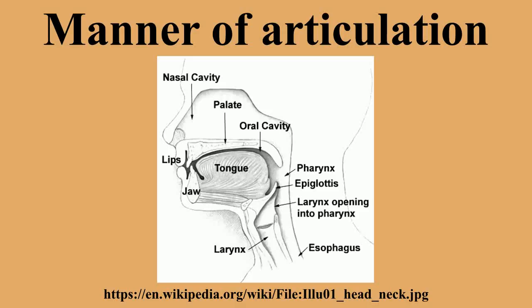Trills involve the vibration of one of the speech organs. Since trilling is a separate parameter from stricture, the two may be combined. Increasing the stricture of a typical trill results in a trilled fricative. Trilled affricates are also known. Nasal airflow may be added as an independent parameter to any speech sound. It is most commonly found in nasal occlusives and nasal vowels, but nasalized fricatives, taps, and approximants are also found.